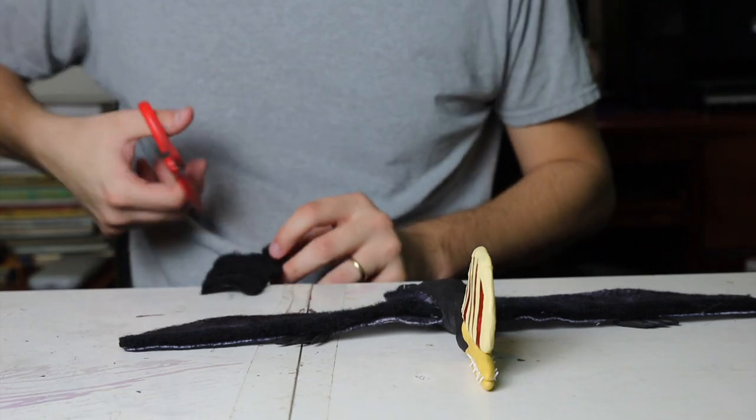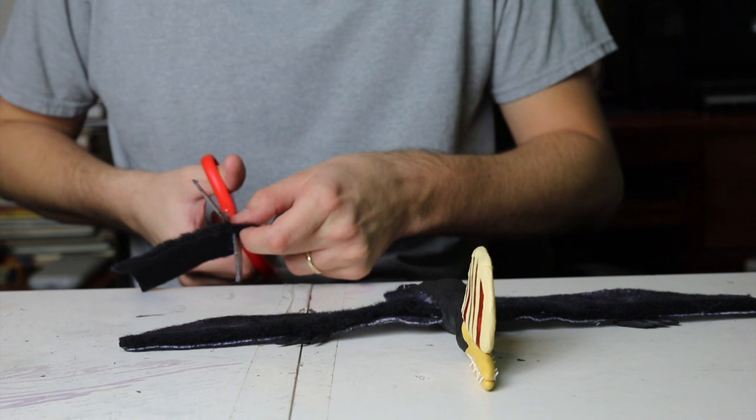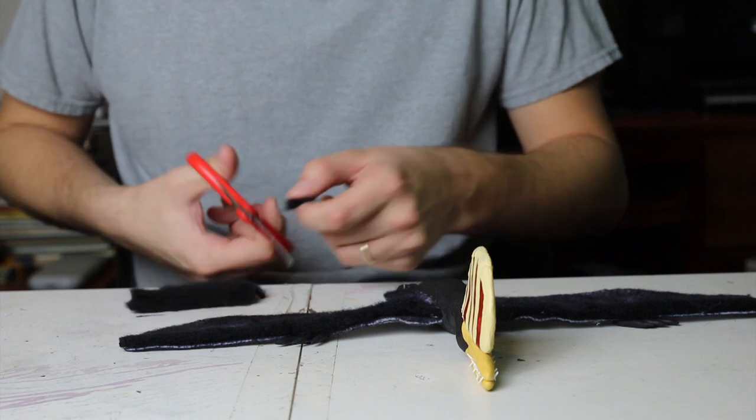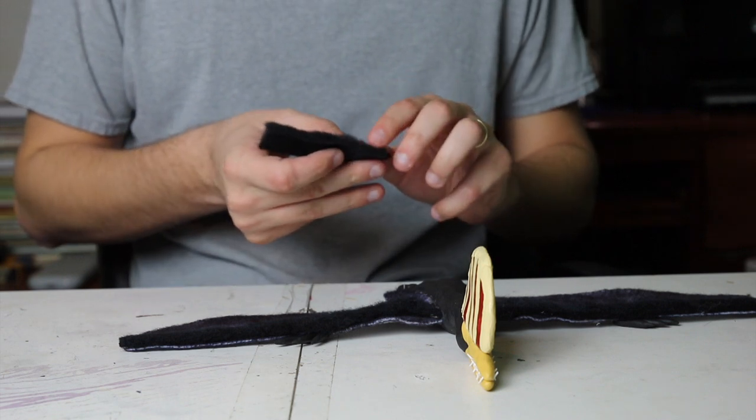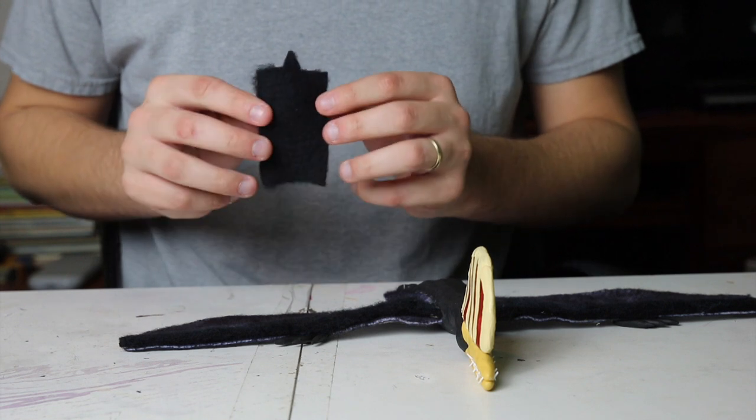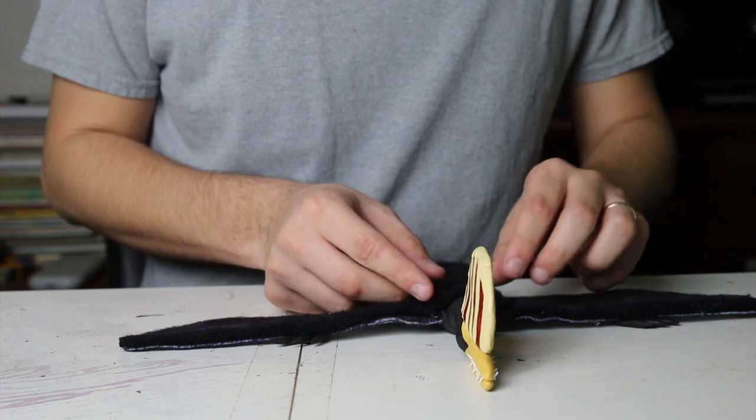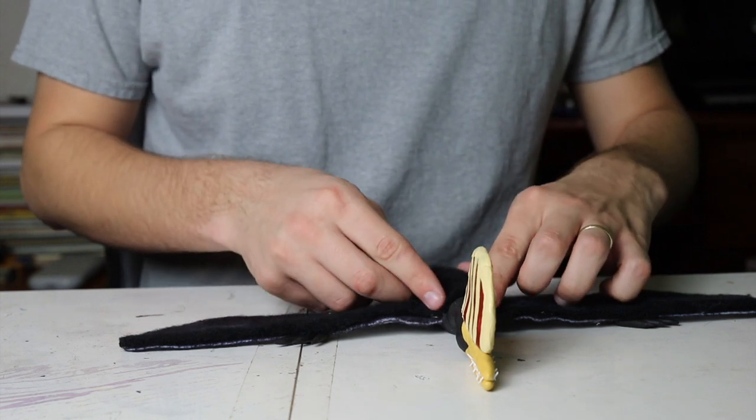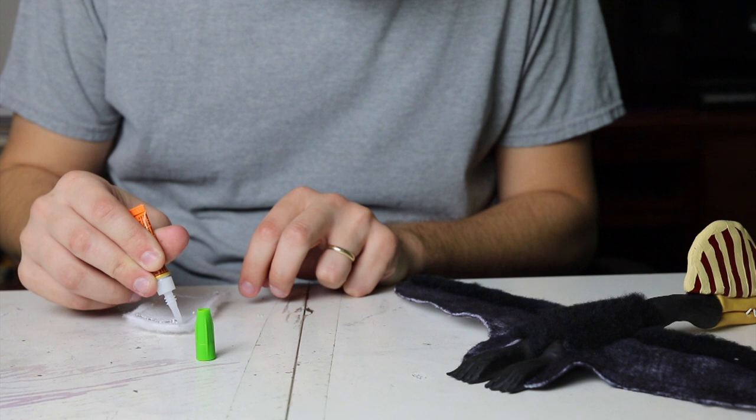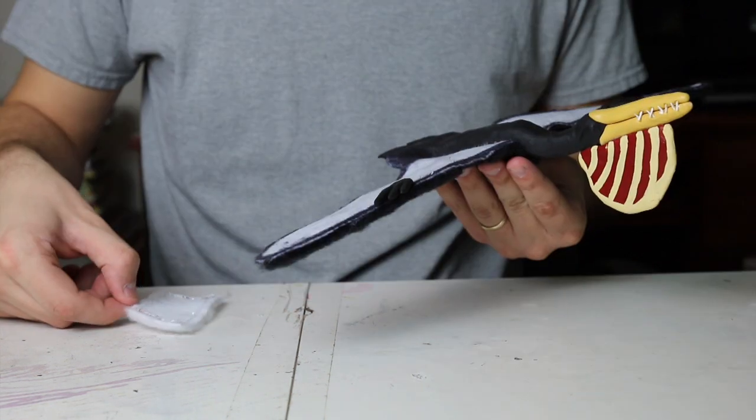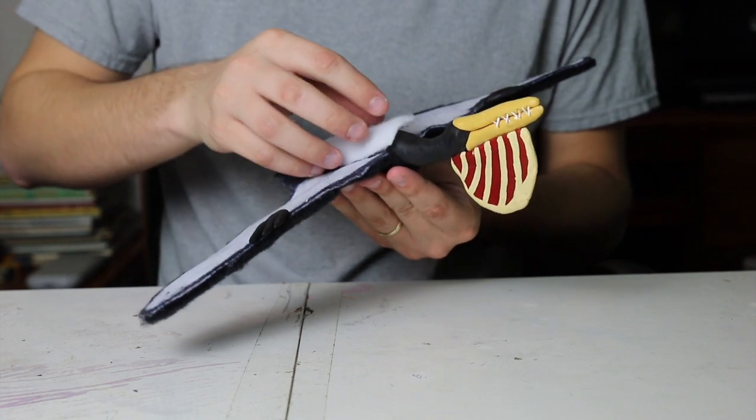Next I'm going to add some plush for the pycnofibers on the rest of the body. Once again I'm going to be using this black plush like I used for the arms and that's going to be for the back of the animal. I'm also going to be cutting out a tiny little bit that's supposed to be the small tail of the pterodactyl which will also be part of this plush. I'm going to super glue that onto the back and then I'm going to take some white plush and cut that out and super glue it onto the belly. Trying to make sure that none of the clay underneath is showing. Don't want to see the seams too much.